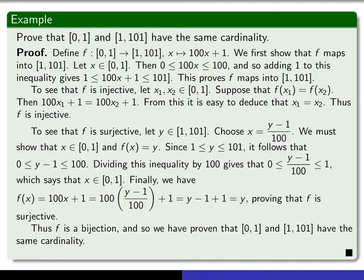Here's my proof that [0,1] and the interval from 1 to 101 have the same cardinality. We define f from [0,1] to [1,101] by f(x) equals 100x plus 1. So you've got to do three things. You have to show that it really does map into this interval, then you have to show that it's injective and that it's surjective. To show that it maps into the interval, you give yourself an element of [0,1]. That means x is between 0 and 1. So multiplying that by 100 and adding 1 gives you that 100x plus 1 lies between 1 and 101.